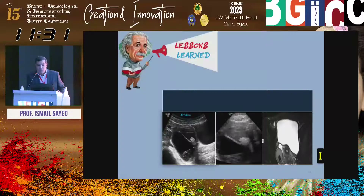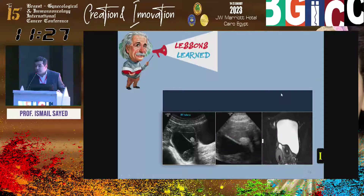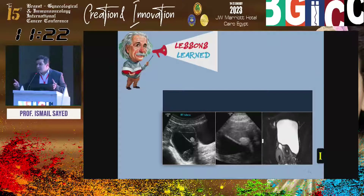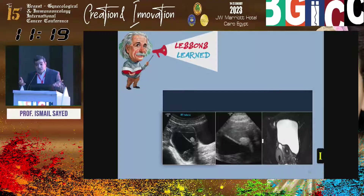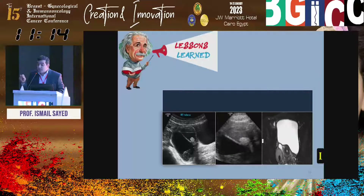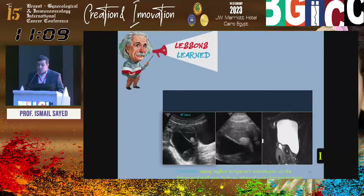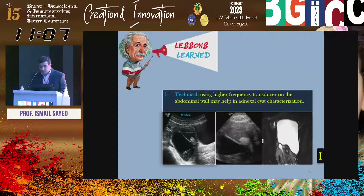Lessons from this case: in children, or in females refusing transvaginal approach, or with pelvic inflammation with pain and tenderness, use the transvaginal transducer through the abdominal wall. Use the linear probe, micro-convex, or any higher frequency transducer.